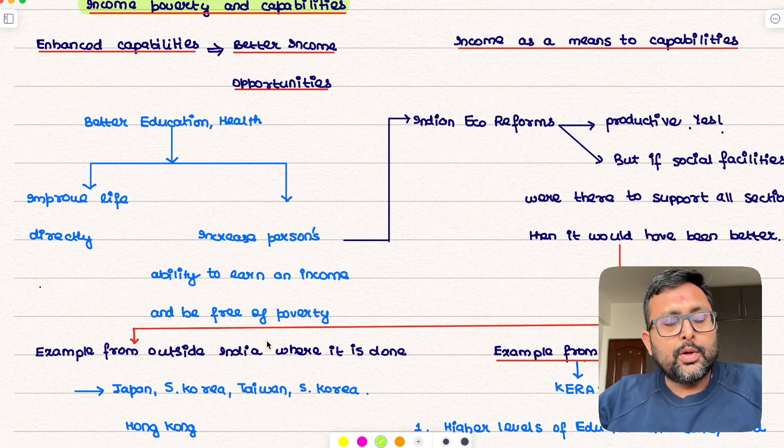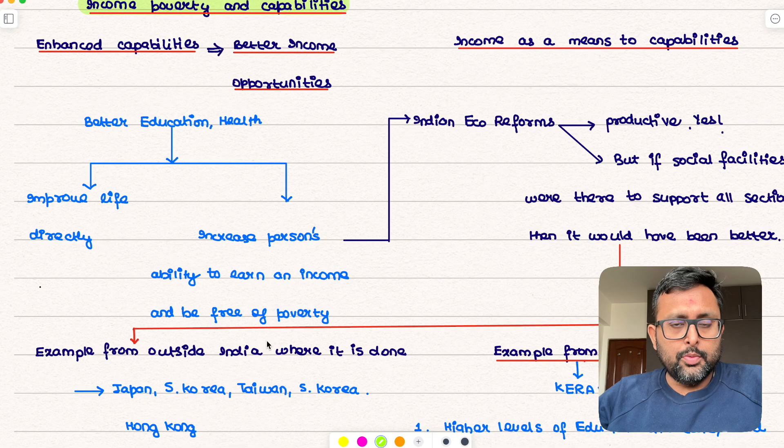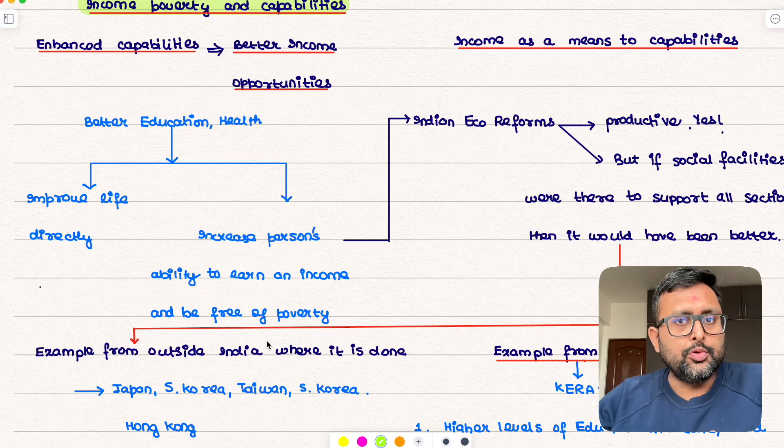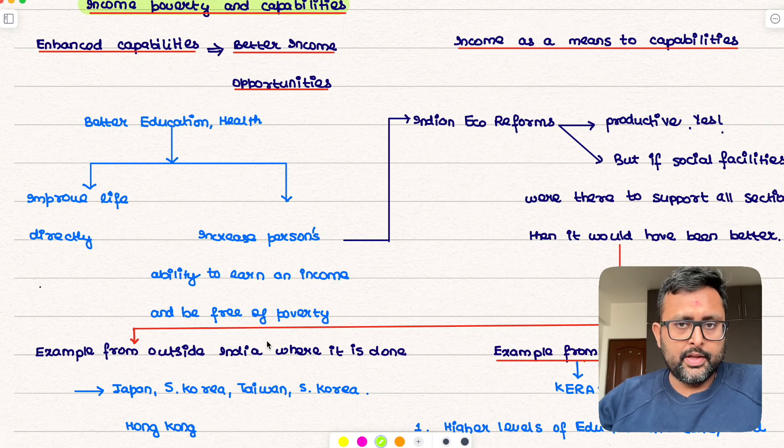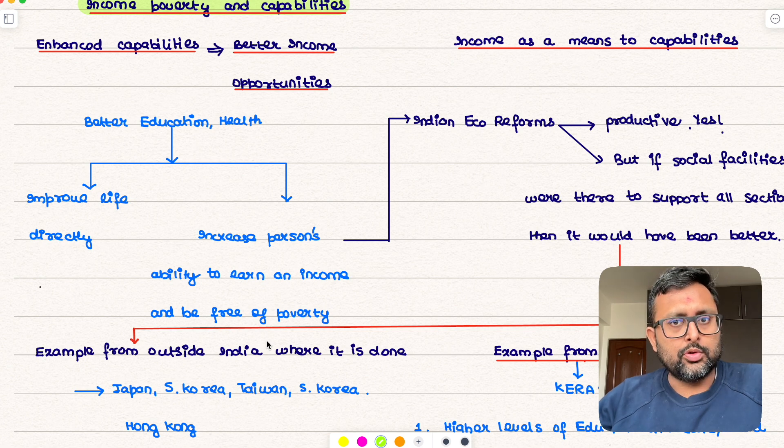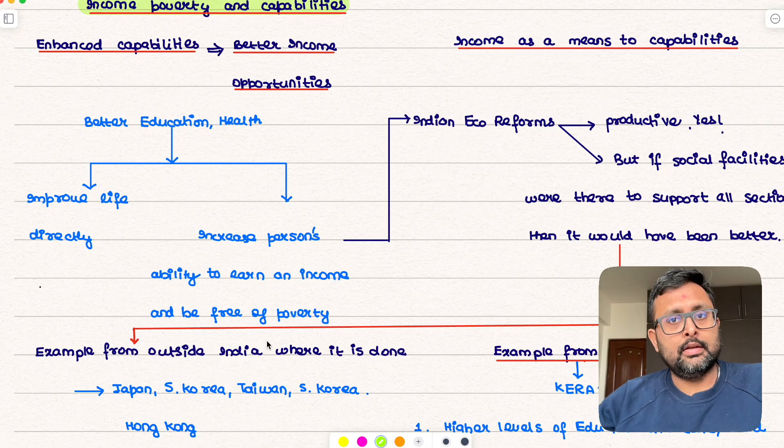So Indian economic reforms is one of that example. There was a lot of pent-up energy before economic reforms and then it was all used after that. What happened was that with economic reforms there were many capabilities were opened up before us and this has undoubtedly increased our ability to earn more.